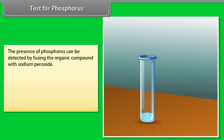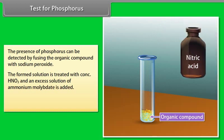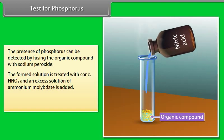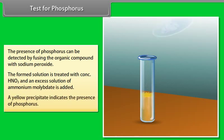Test for phosphorus: the presence of phosphorus can be detected by fusing the organic compound with sodium peroxide. The formed solution is treated with concentrated HNO₃ and an excess solution of ammonium molybdate is added. A yellow precipitate indicates the presence of phosphorus.